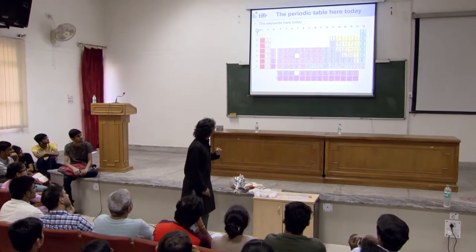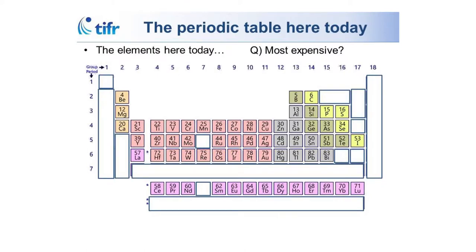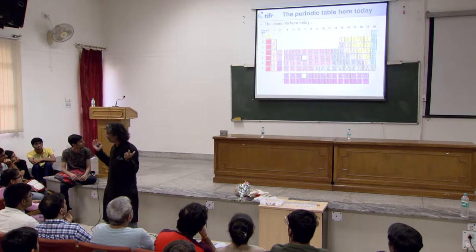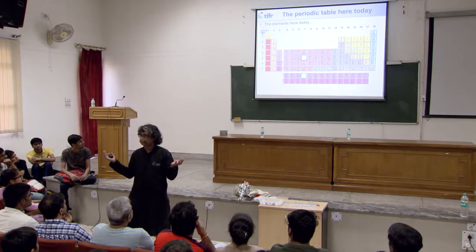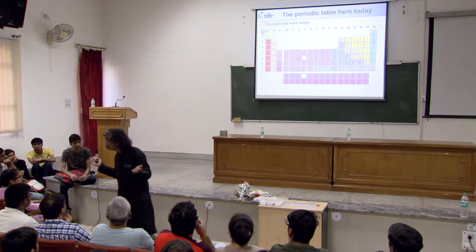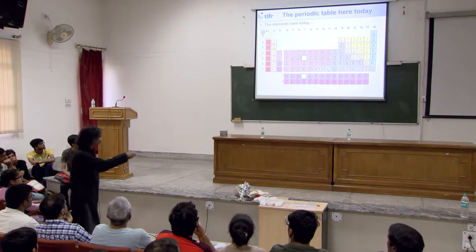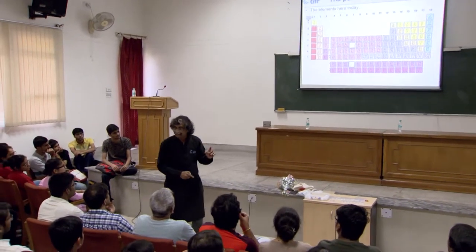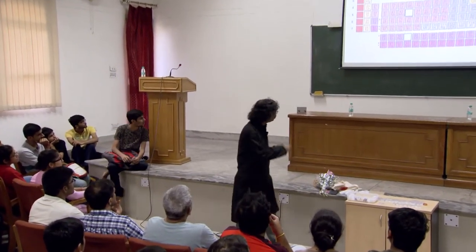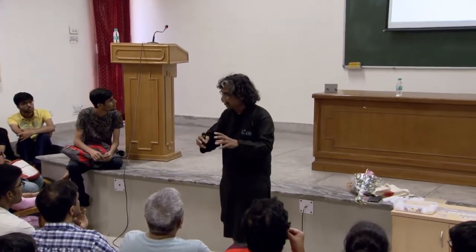A question for you: which elements don't we have here? We don't have 43 and 61 — technetium and promethium. Why? They are the two radioactive elements within the first 92 whose half-lives are such that whatever was there at the formation of the Earth is now gone. So all the promethium and technetium available now is artificially produced.